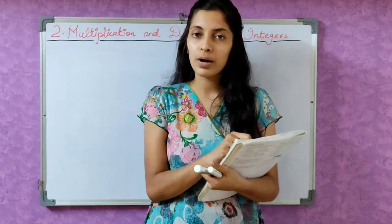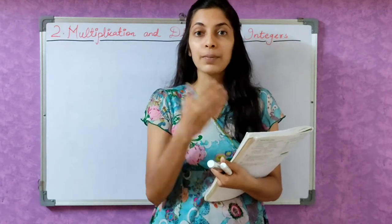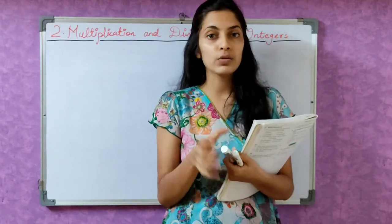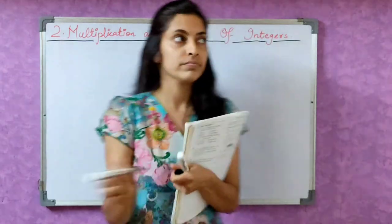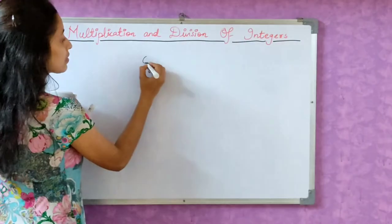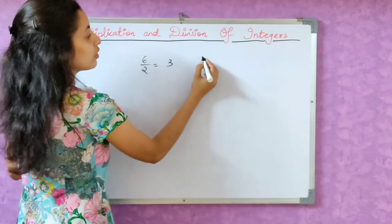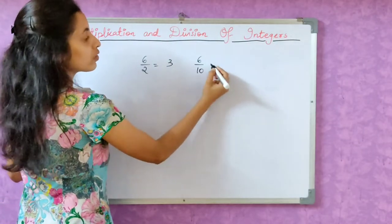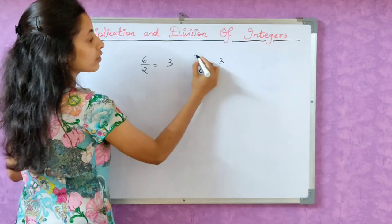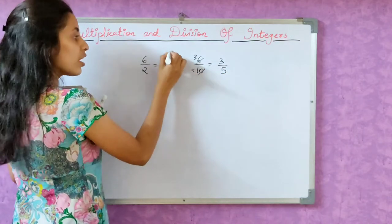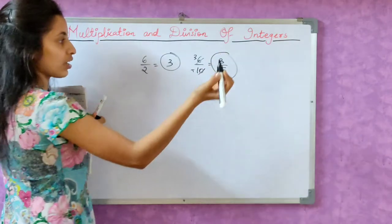First, we have studied how to do basic division. One positive integer divided by one positive integer. For example, 6 by 2. What is our answer? 6 by 2 is 3, correct. Let's do one more. 10 by 2. 2 threes are 6, 2 fives are 10. Answer is 5. Either our answer is integer or fraction. Correct.